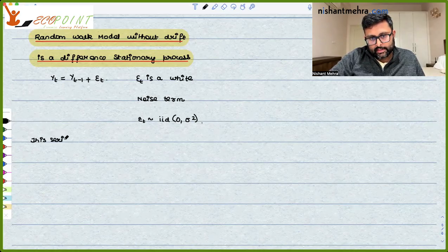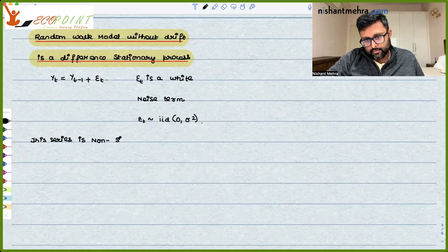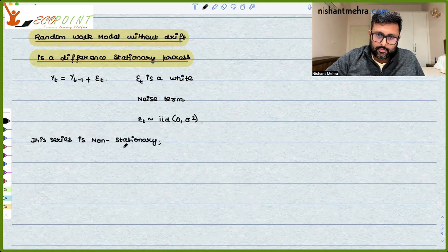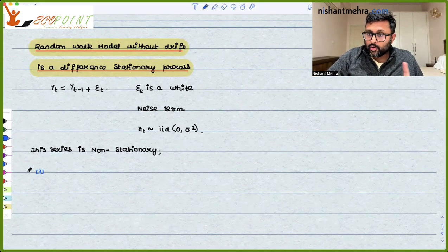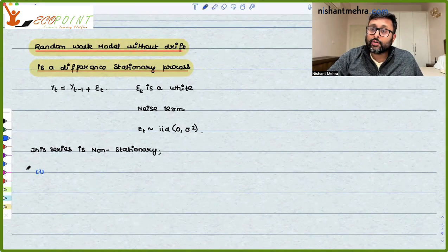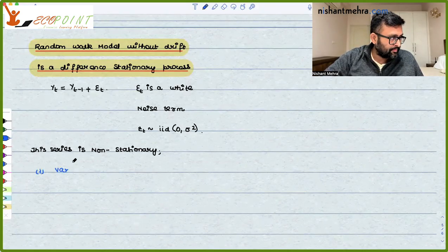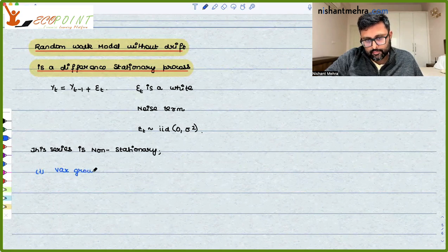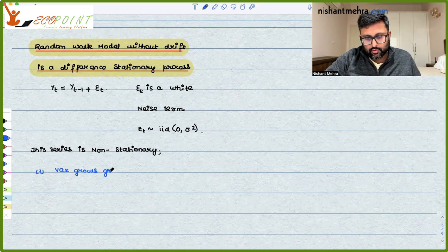First of all, this random walk without drift series is non-stationary. It is non-stationary because it doesn't have a constant variance. Its variance is growing over time, although it has a constant mean.